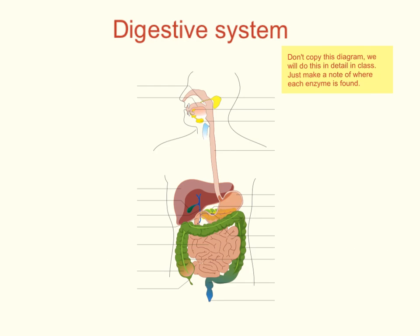Here's the diagram of the digestive system. You've talked about the digestive system earlier in the course when we looked at the stomach in detail — the three different types of tissue: the muscular tissue, the epithelial tissue which is the surface layer, and the glandular tissue that produces the digestive juices.